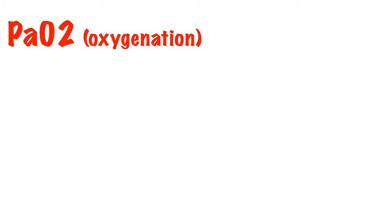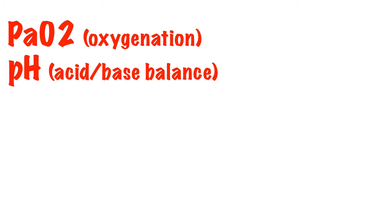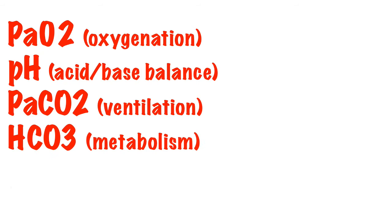They measure the partial pressure of oxygen in the blood, the pH of the blood—how acidic or alkalotic the patient is—the partial pressure of carbon dioxide in the blood, the level of bicarbonate in the blood, and the calculated amount of excessive base within the blood, termed the base excess.